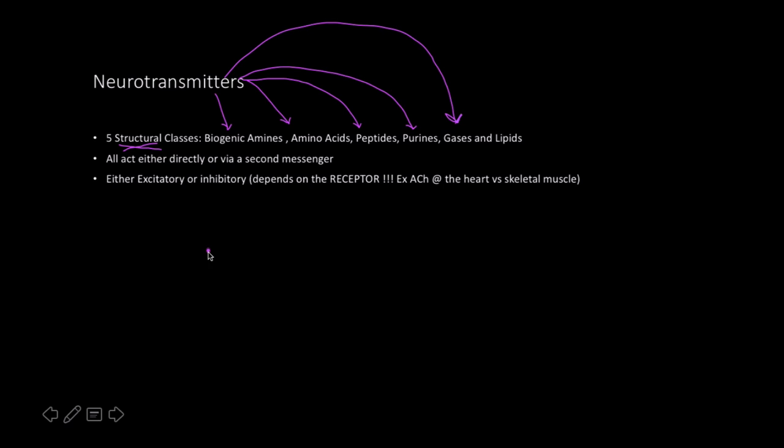All of these neurotransmitters are going to act either directly or via a second messenger. One of the most important things to understand is that whether a neurotransmitter has an excitatory or inhibitory effect depends on the receptor.